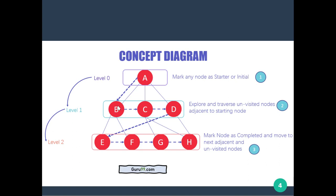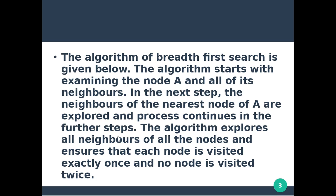Unvisited nodes are traversed. Level 0 leads to level 1. The first node visited is B, then C, then D, then E — that is level 2. Mark each node as completed and move to the next adjacent unvisited nodes. The algorithm exposes all neighbors of all nodes and ensures that each node is visited exactly once — no node is visited twice.